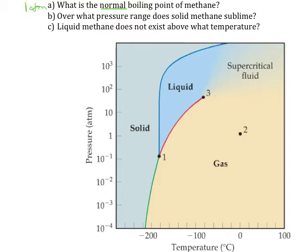We just look at this phase diagram and find one atmosphere of pressure. We can see here on the red line when it goes between a liquid and a gas. Then we just read down to figure out what temperature we're looking at. Notice this is a negative temperature scale — we're looking at probably about negative 160 degrees C.